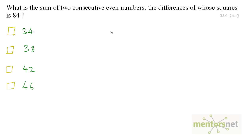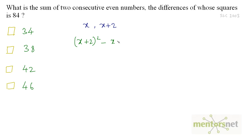The two consecutive even numbers can be written as: if we take the first number as x, the next number will be x plus 2, because the difference between two consecutive even numbers is 2. The difference of squares is given as 84, so the bigger number squared minus the smaller number squared is 84. We have: (x + 2)² minus x² equals 84.